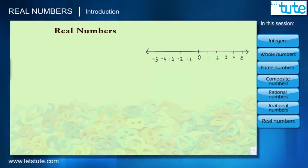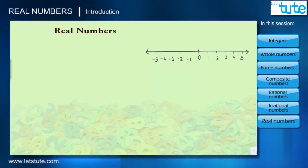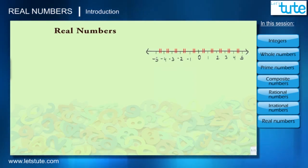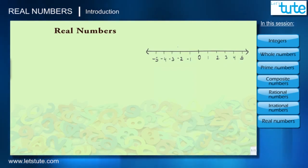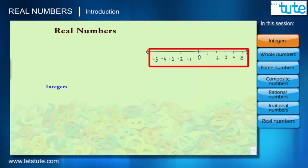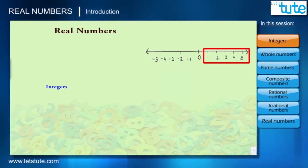In the middle of the number line we have the number zero, and on the right hand side and left hand side of zero we have positive numbers and negative numbers that are evenly spaced.